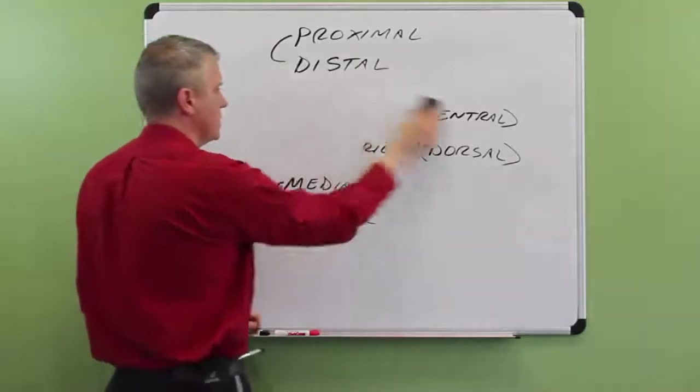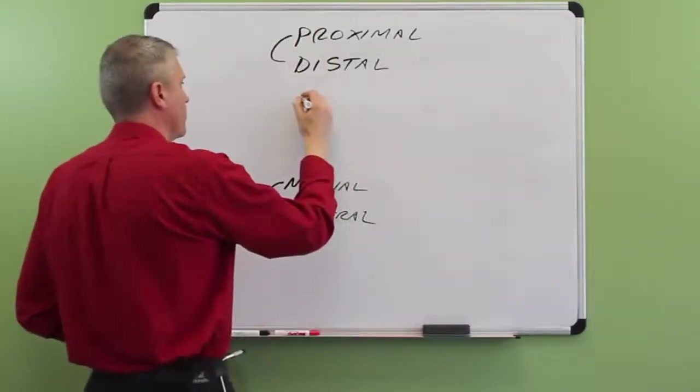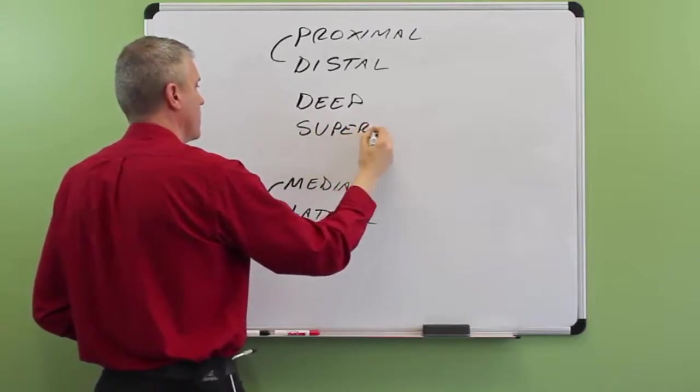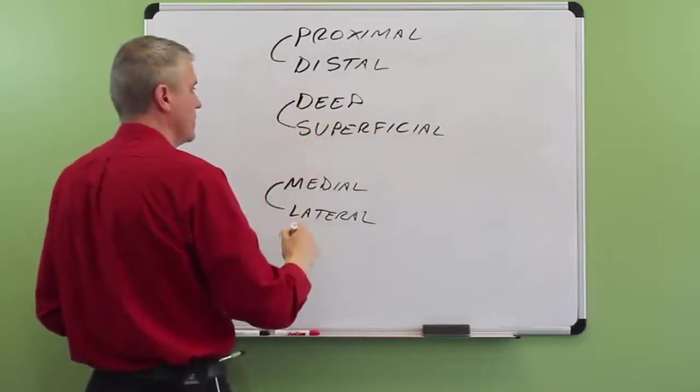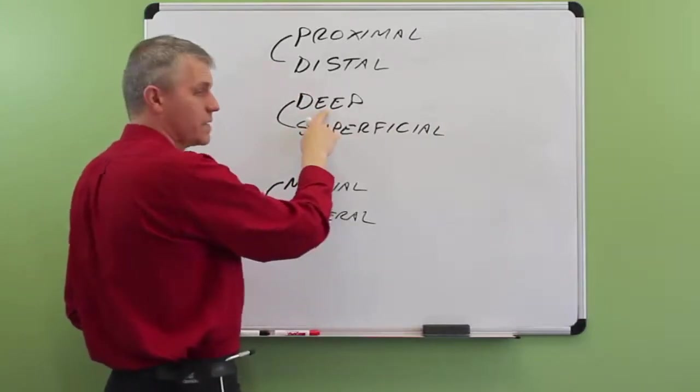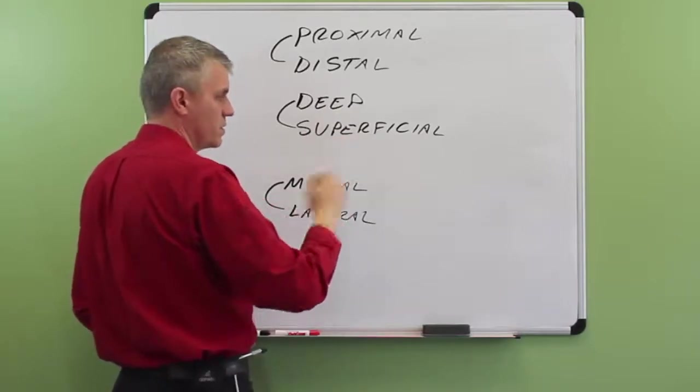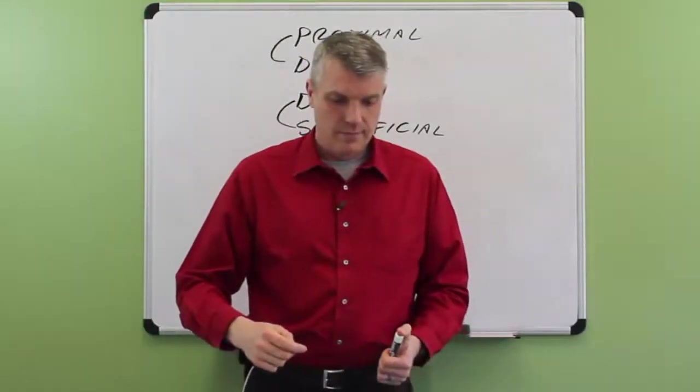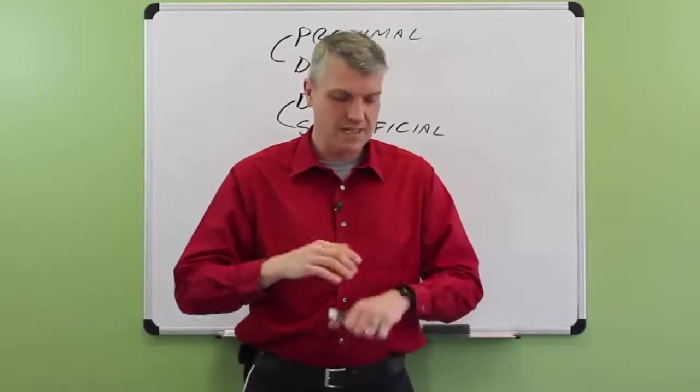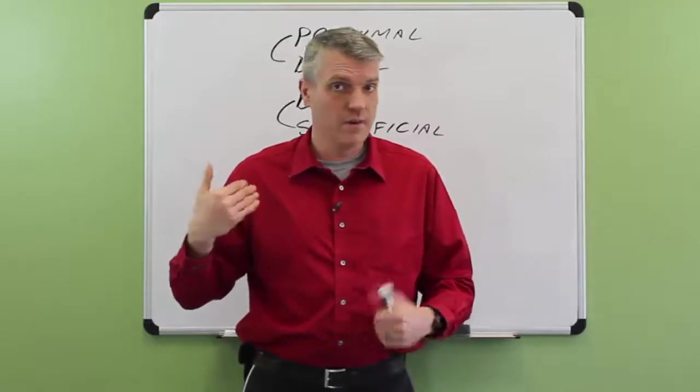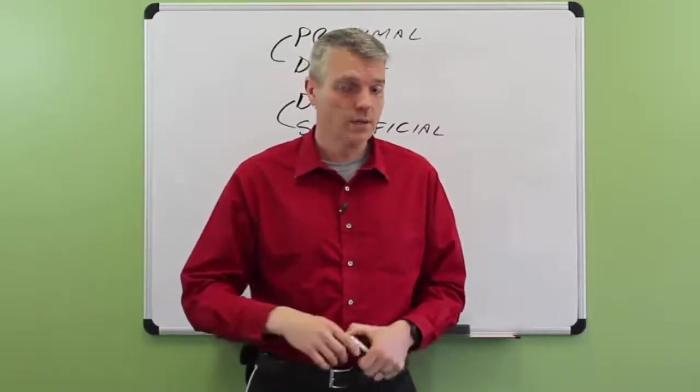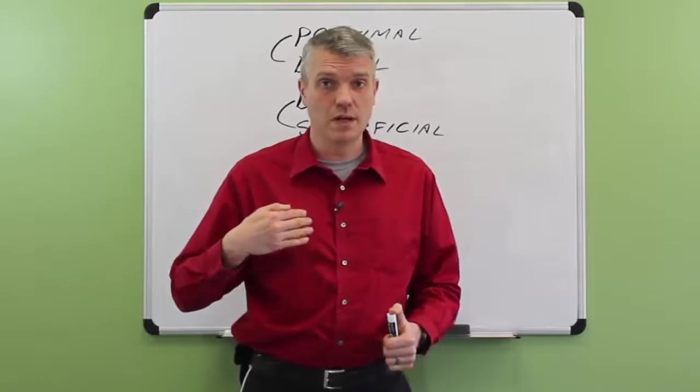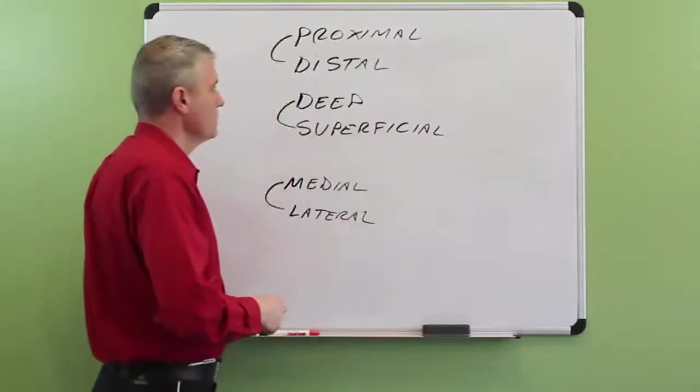And I think we have one more set to do. And that is deep and superficial. Deep, meaning literally deeper inside of the body. And superficial, meaning more towards the surface of the body. So, again, just to give you the way we might use these, my heart is very much deep to my skin. And the skin is very much superficial to my heart. Or to get two organs close together, just for fun, the heart is deep to the sternum. The sternum is superficial to the heart.